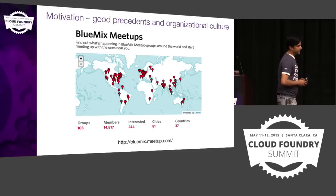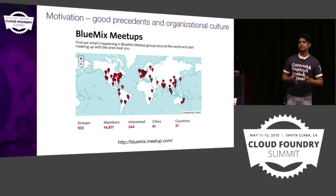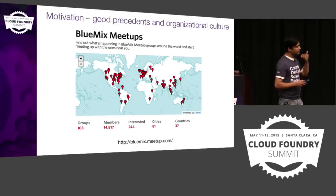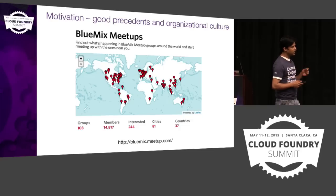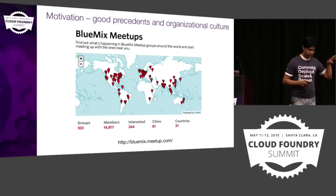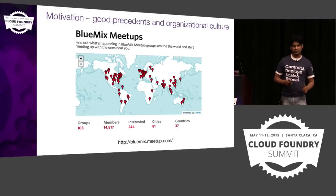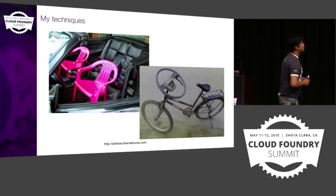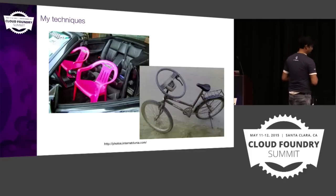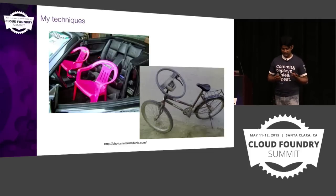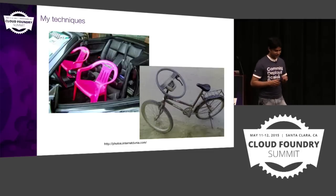With respect to Bluemix — since it's a platform targeted towards developers — there was a great realization within the organization that we needed to grow it at the grassroots level. There are around 14,000 to 15,000 people participating in Bluemix meetup groups across 81 cities in around 30-plus countries. That's a huge initiative, all within a period of one year. You rarely get what you want as-is, so you need to get a bit innovative.